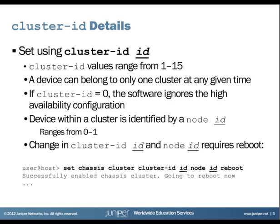To put a node into a cluster, we have a couple of parameters to configure. One is the cluster ID — the range is from 1 to 15. It's important that the nodes are in the same cluster, and they can only belong to one cluster. A cluster ID of zero indicates that we're not participating in a cluster configuration. Once you configure the cluster, you configure the node ID for the specific SRX — it's a binary value, either 0 or 1. That value determines the first number within the interface name, which is normally the slot number or FPC number.